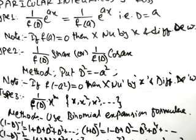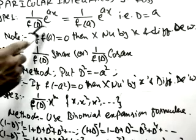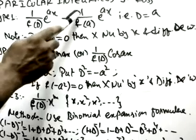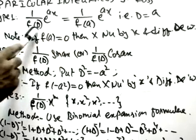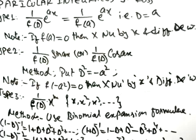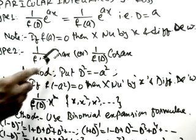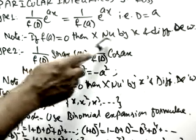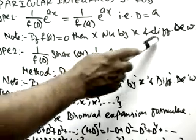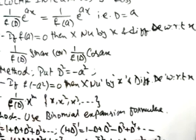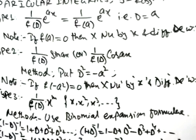The first type is when we have e^(ax). The formula is PI = (1/f(D))·e^(ax) = (1/f(a))·e^(ax), substituting a in place of D. But if f(a) = 0, then 1/0 is undefined. In that case, multiply the numerator by x and differentiate the denominator with respect to D.